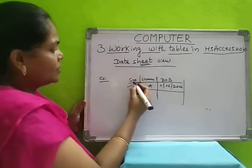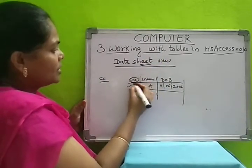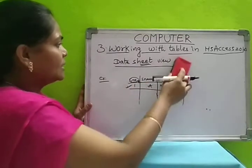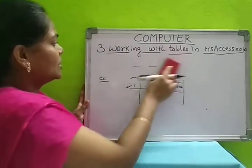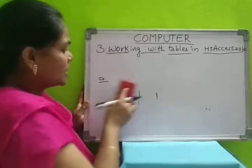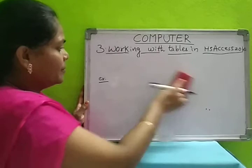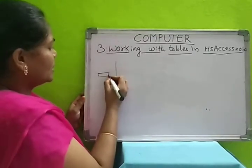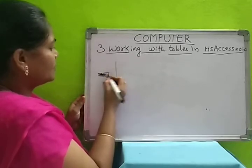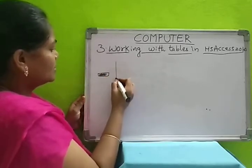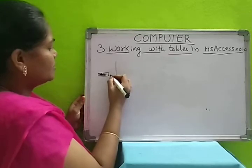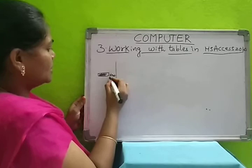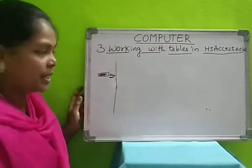In datasheet view, directly you can write the column names, select the data type, and enter the records. After entering, you have to save it. Whatever name you give, that name will be given to the table. In the navigation pane on the side, tables are listed and the name you give will be displayed there.